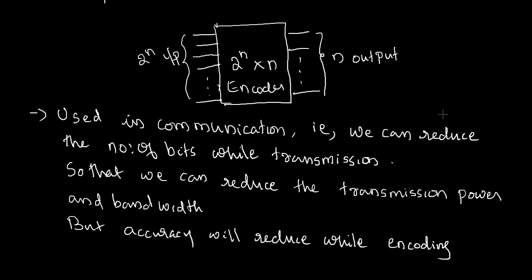Encoders come under the MSI technology, that is medium scale integration technology. In this lecture, we are discussing about two types of encoders: a 4-to-2 encoder and an 8-to-3 encoder.